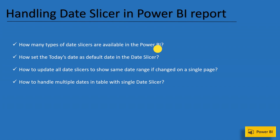We are going to cover: how many types of date slicers are available in a Power BI report; how can you set today's date as a default date in your date slicer; and how you can update all date slicers when you update a single one. Assume you have multiple date slicers across multiple pages and a user changes a date slicer in one place — it should reflect that change on all date slicers so the user won't have to set the same date range on every page.